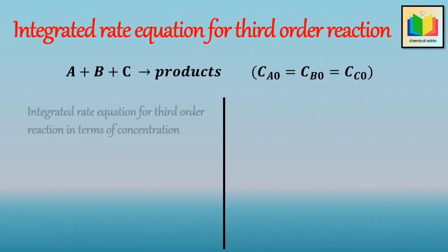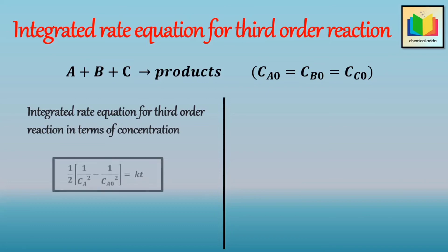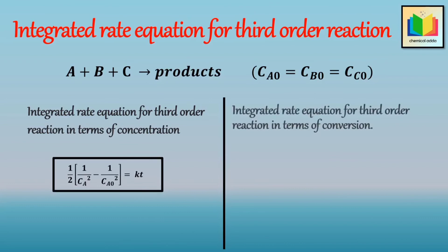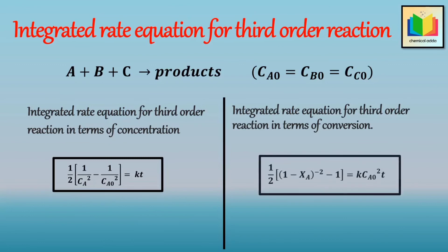Hence we get two results. The integrated rate equation for third order reaction in terms of concentration: (1/2) · (1/CA² − 1/CA0²) = kt. And the integrated rate equation for third order reaction in terms of conversion: (1/2) · (1 − XA)^(−2) = k·CA0²·t. That's all about the integrated rate equation of third order reaction.